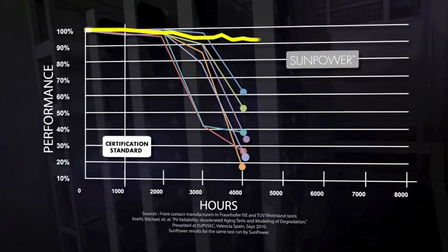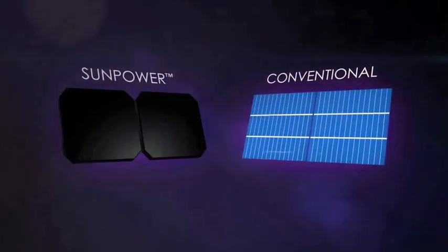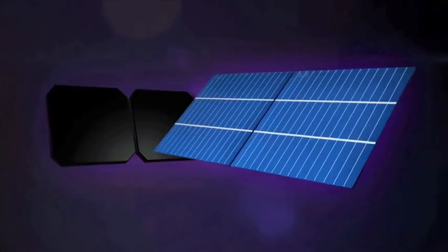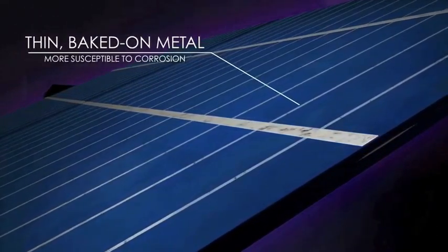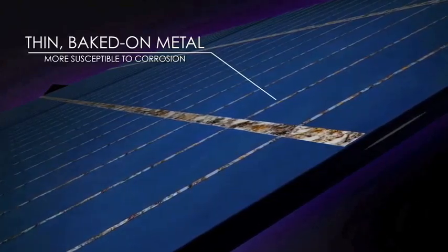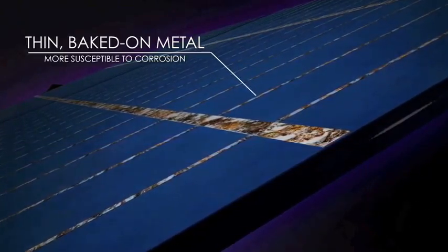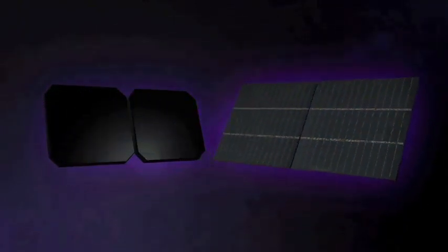Why? Cell design is key. Conventional cells use thin, baked-on metal for the electrical connections. In humid conditions, the thin metal corrodes and breaks electrical connections, resulting in power loss.